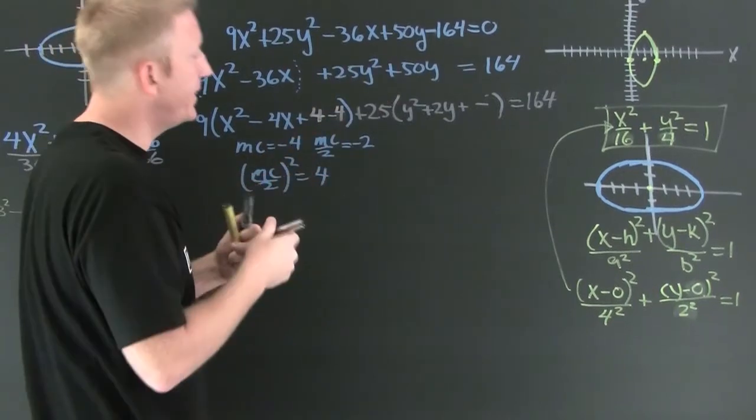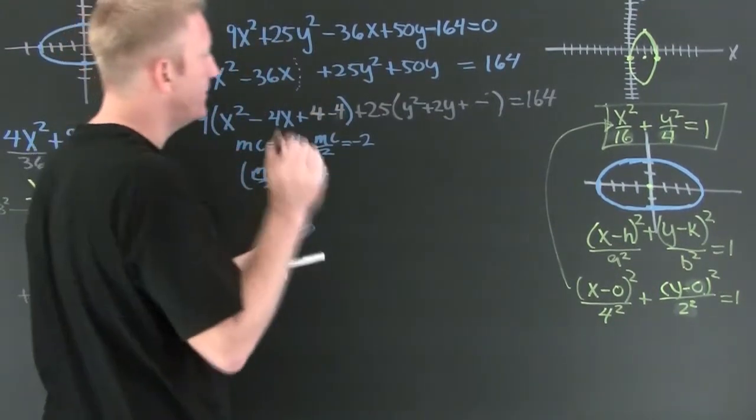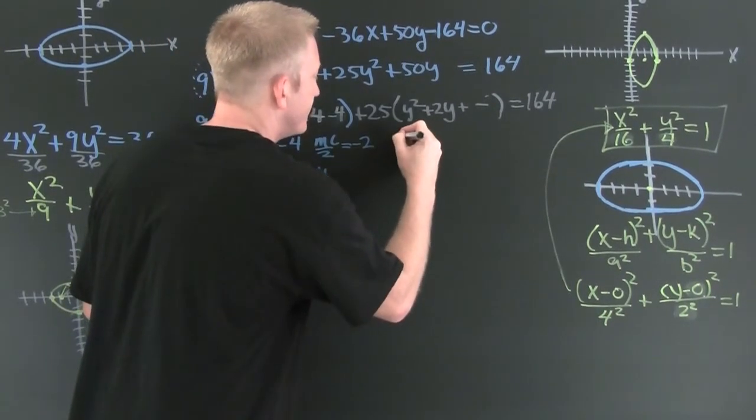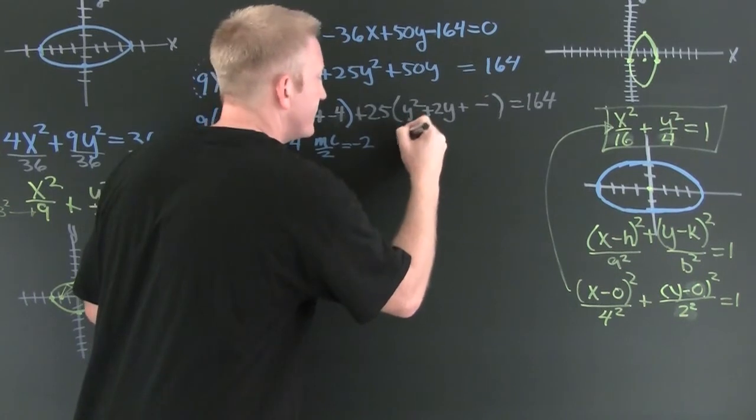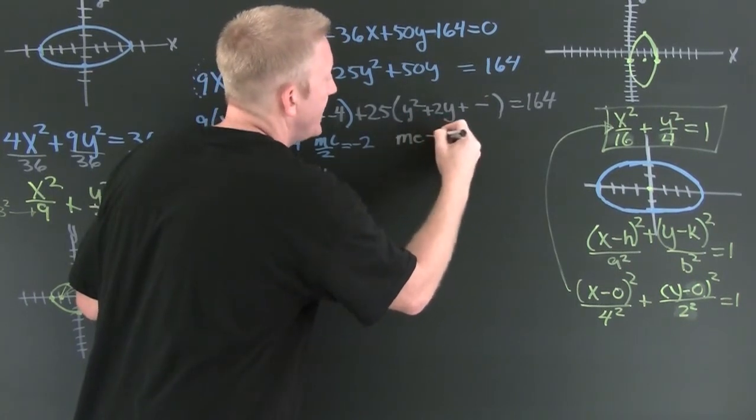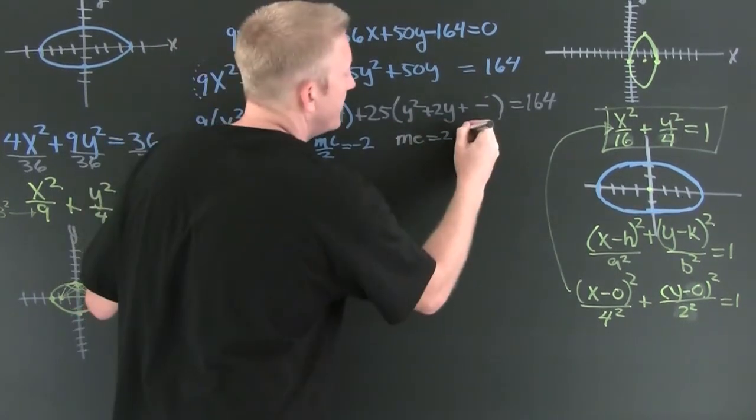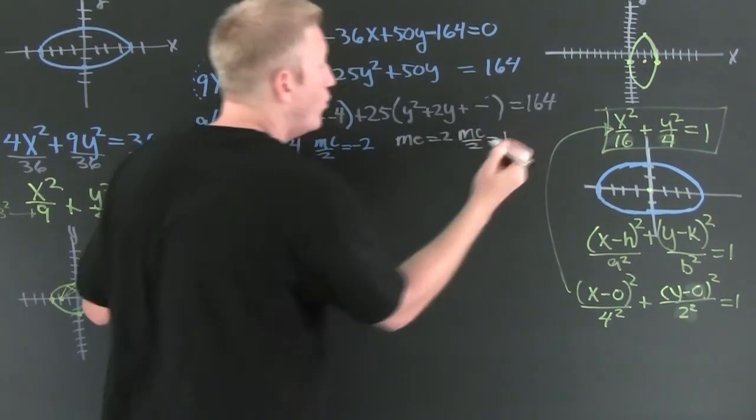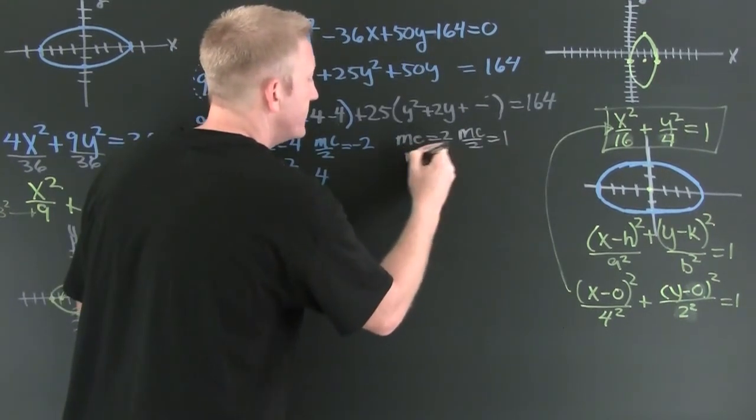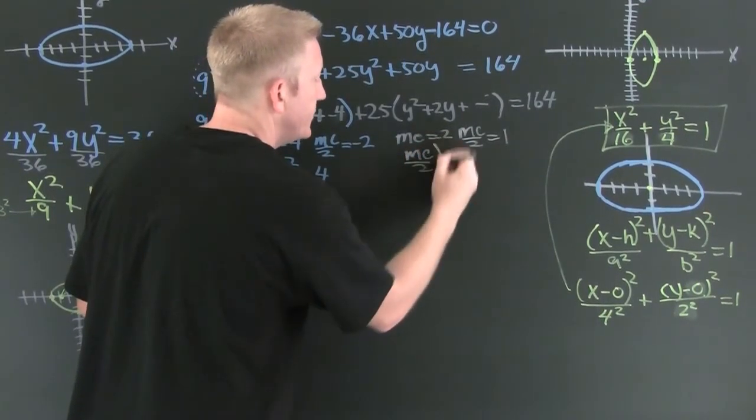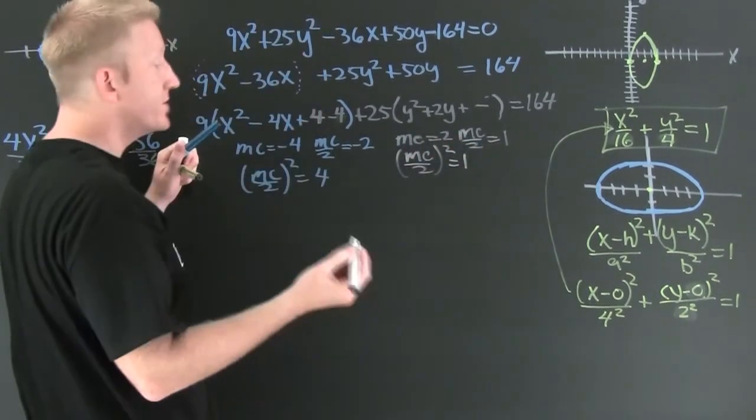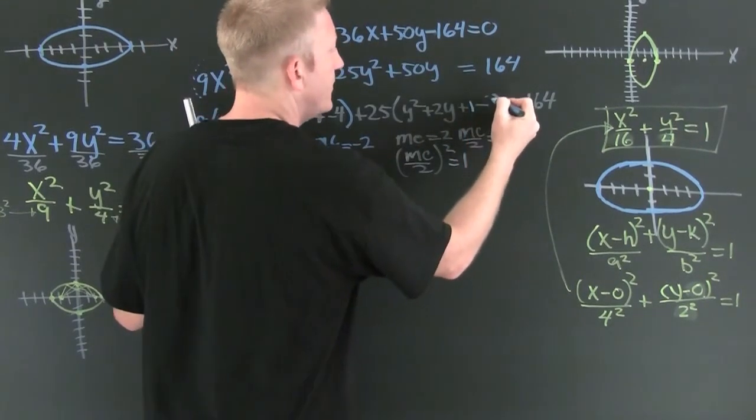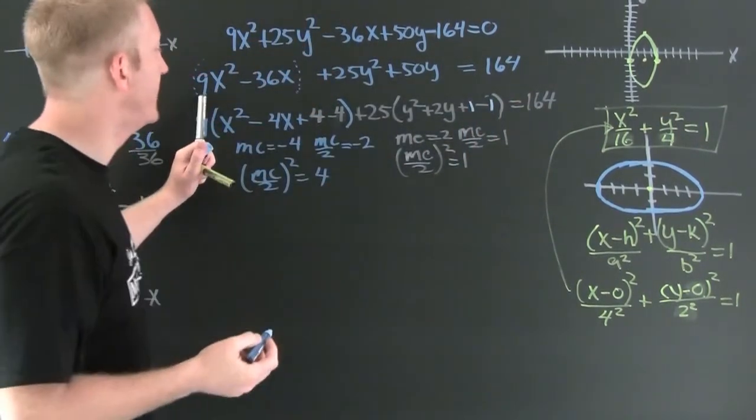Now I want to do the same thing over here to this y one. My middle coefficient is 2. My middle coefficient over 2 is 1. And my middle coefficient over 2 squared is also 1. So then that's what I want to add and subtract. Plus 1, minus 1.